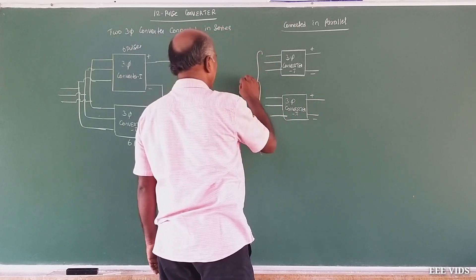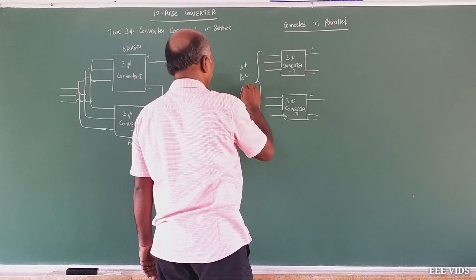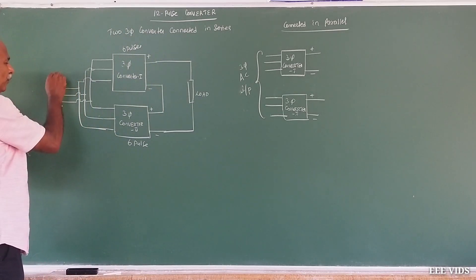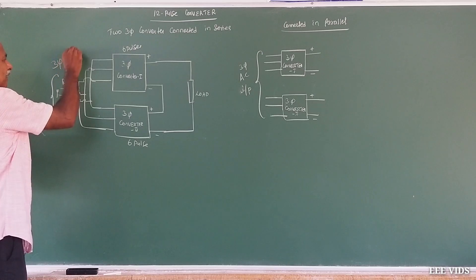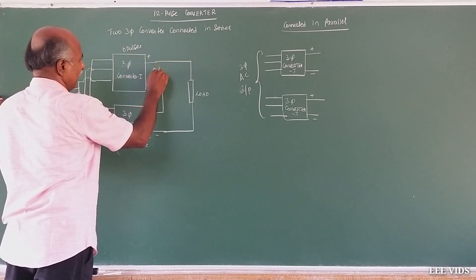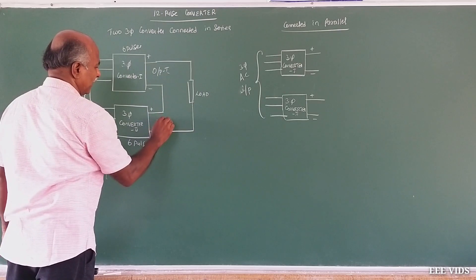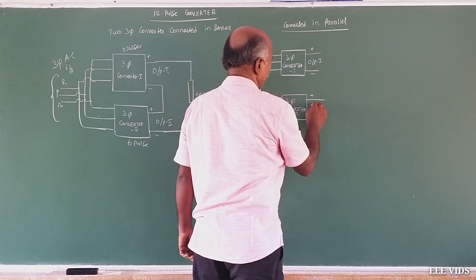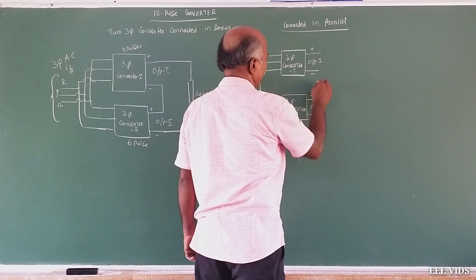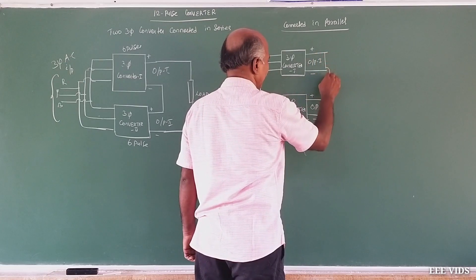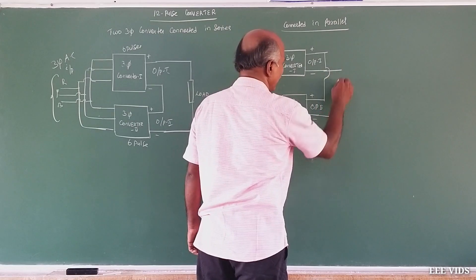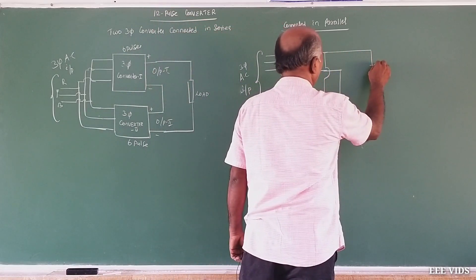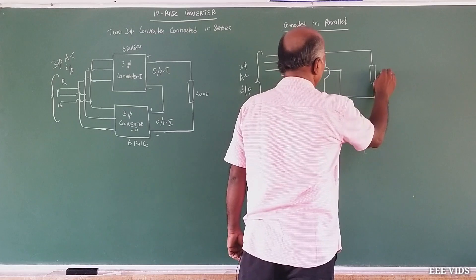The input is three-phase AC input — R, Y, B — for each converter. This is the output: Output 1 and Output 2. In the parallel connection, plus is connected to plus and minus is connected to minus. The load is connected across the plus and minus. This is the parallel connection.